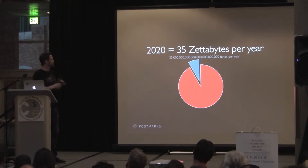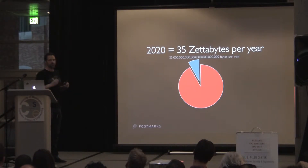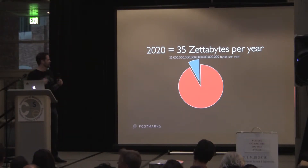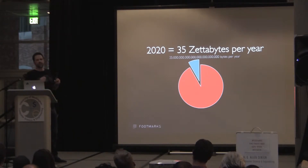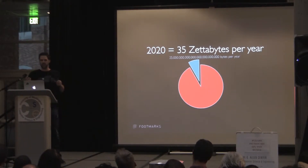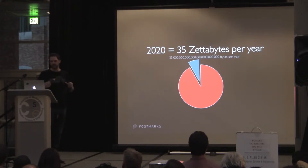By 2020, there's going to be an estimated 35 zettabytes per year generated in data — trillions upon trillions of HD videos in context. That's largely going to be due to expanded networks, data networks, storage space, IoT, sensor data being generated, and social media posts. There's a massive amount of data being generated.